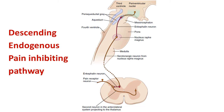The descending endogenous pain inhibiting pathway: morphine-like agents such as opioids act at many levels in the analgesia system. Natural brain opiates include pro-enkephalin, pro-dynorphin, and pro-opiomelanocortin. Opiate-like substances also produce analgesia, such as beta-endorphin, met-enkephalin, and leu-enkephalin.